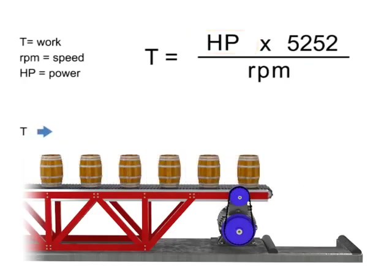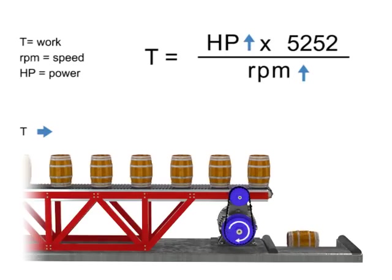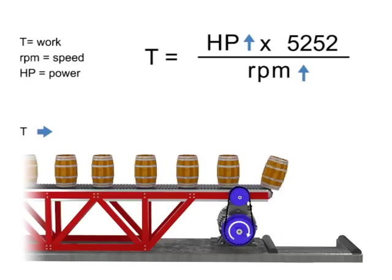Let's say we wish to keep torque constant but want to increase the production of barrels. If the torque or number of barrels on the conveyor belt remains constant but speed increases, then the horsepower of the motor also increases. In other words, a more powerful motor is required to produce the same amount of torque more quickly.